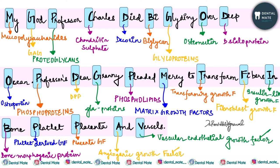The organic matrix has two components: type 1 collagen fibrils and ground substance. The ground substance is made up of mucopolysaccharides and matrix growth factors. Under mucopolysaccharides there are five things: glycosaminoglycans (GAG), proteoglycans, glycoproteins, phosphoproteins, and phospholipids. This concludes the physical and chemical properties of dentine.